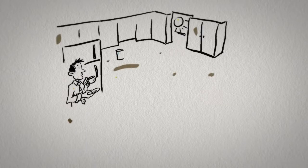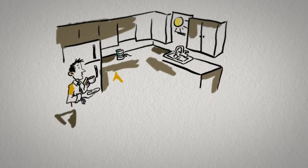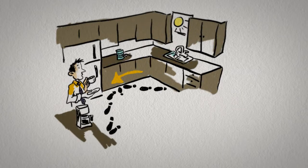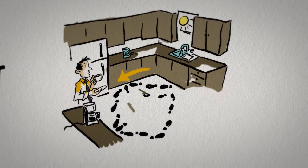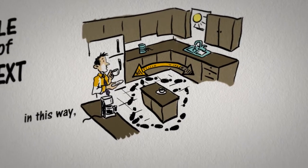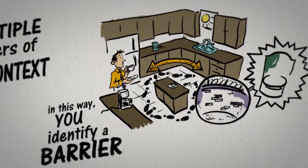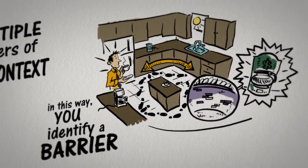If you notice that you have to walk back and forth in the kitchen a lot to get the items you need, you may decide to arrange those items closer to where you are working. In this way, you have identified a barrier. If you notice that your coffee maker takes too long to warm up, you invest in a better one.